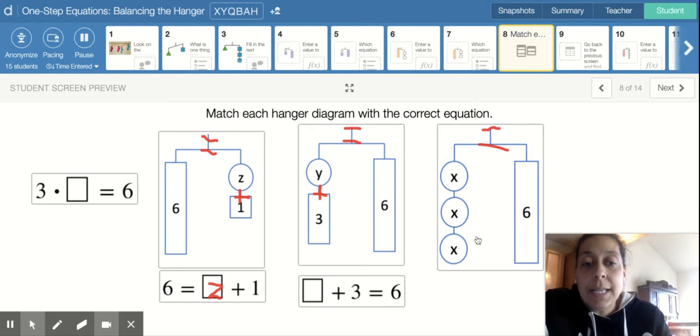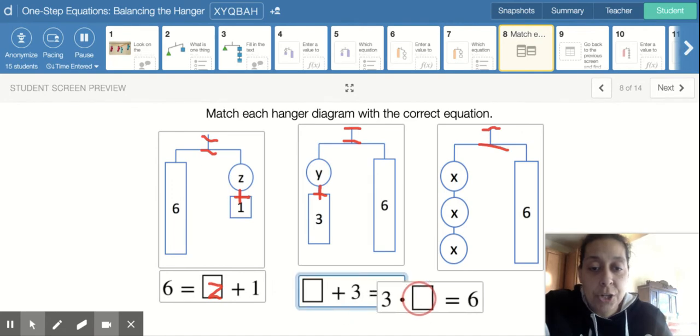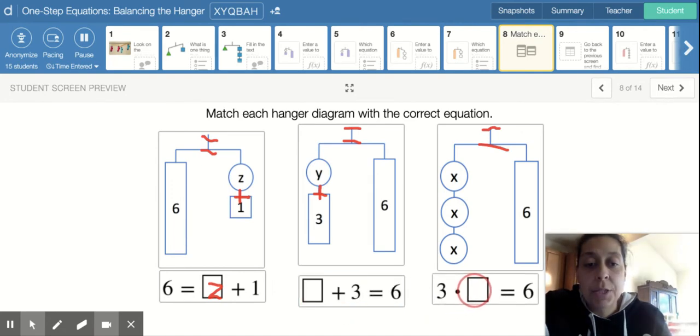Now this one's a little bit different because it has how many X's? It has three X's. And what operation can I use? I can use actually multiplication here. So this becomes three times X equals six. So that is why this one matches with this one.